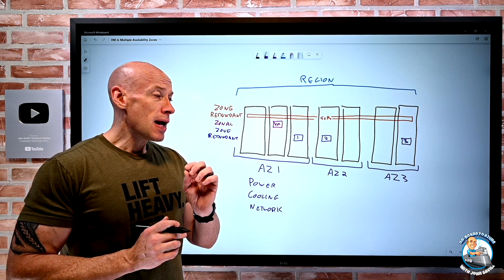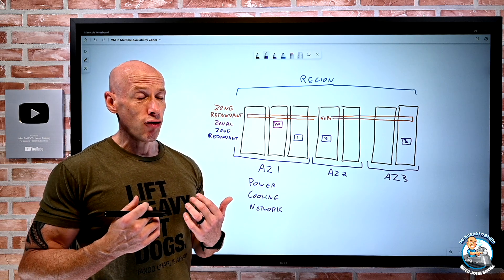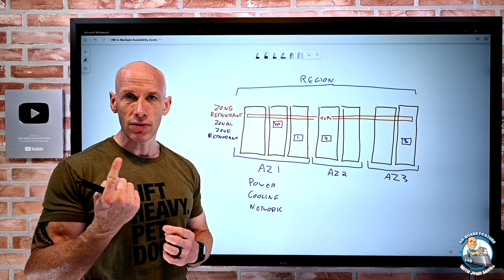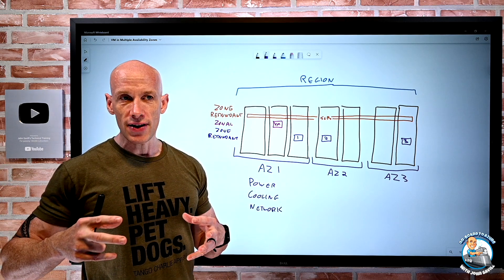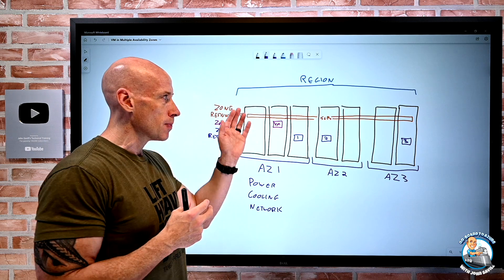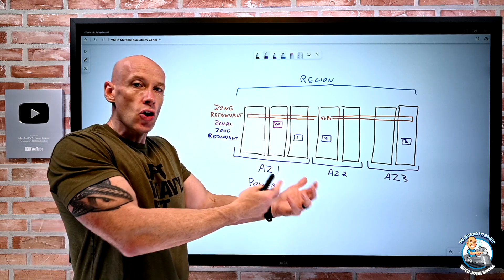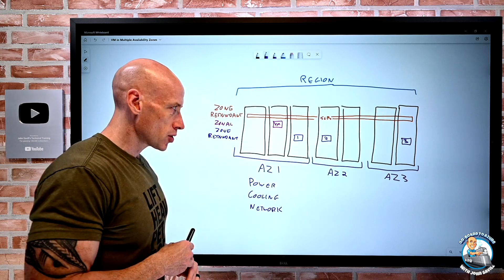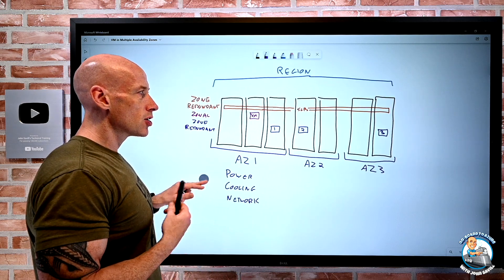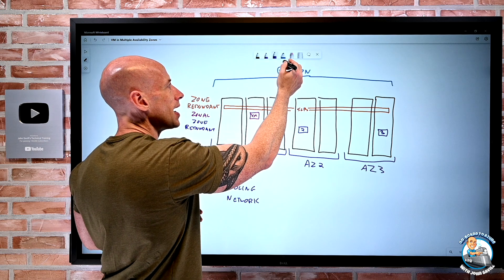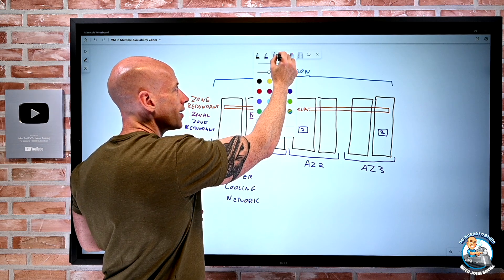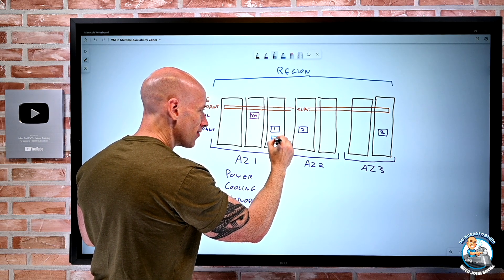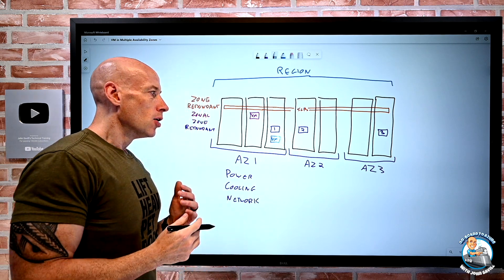Now, realize maybe my scenario is actually different. Maybe my scenario is more, hey, I do only have one VM. My app can't run over more than one VM. And I'm trying to get it resilient across multiple AZs. Well, that is not going to do this. Because that portal action is going to create three virtual machines. If I have this scenario where I can only have this unicorn, this one super special virtual machine that can only have this single instance, well, one option I could leverage to make it resilient would be to use things like Azure Site Recovery.